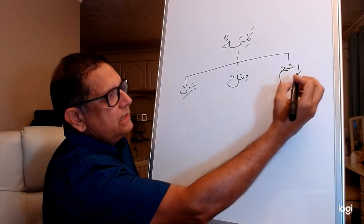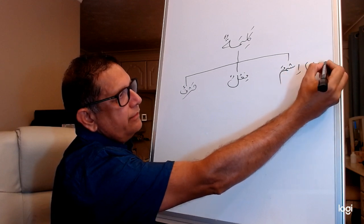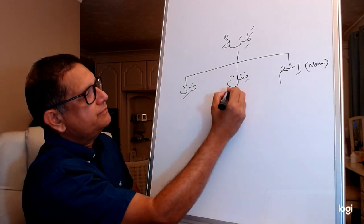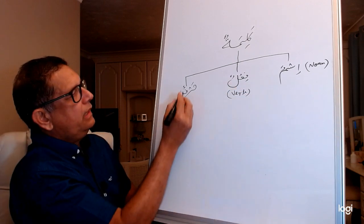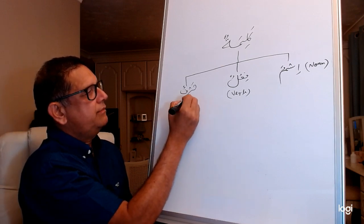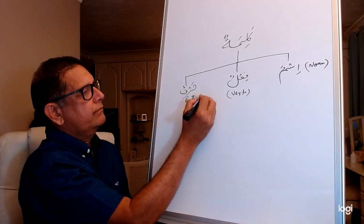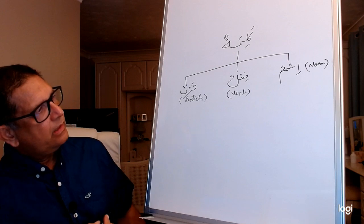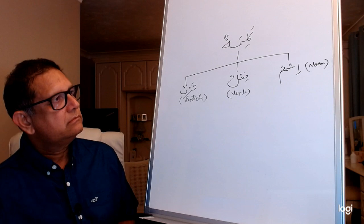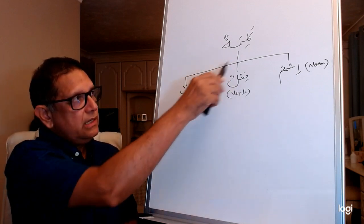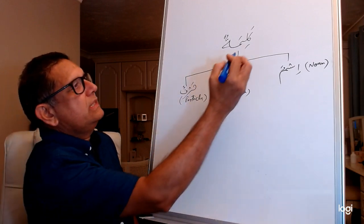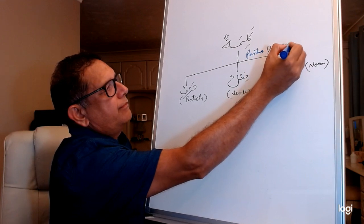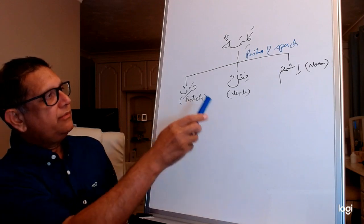We can translate these into English very easily. Ism is noun — ism literally means name, and noun also means name. Fi'l is verb, and harf we loosely translated as particle. There is nothing equivalent to harf in English, so particle will do for now. In English we have eight or nine parts of speech; in Arabic there are only three.